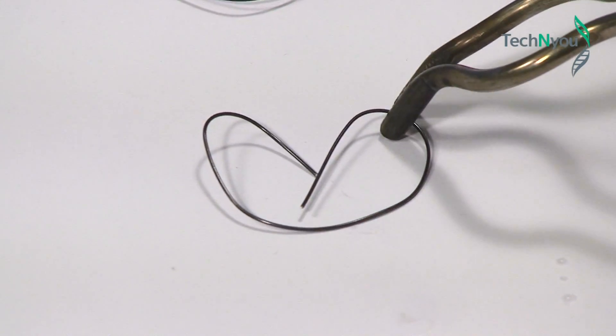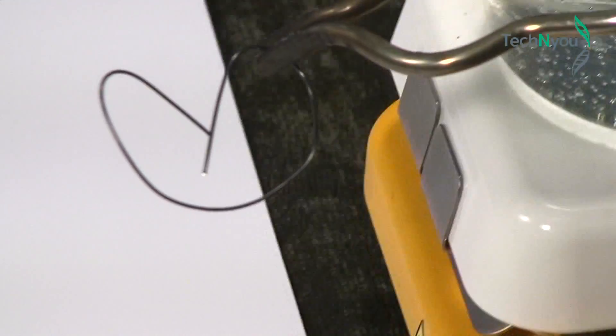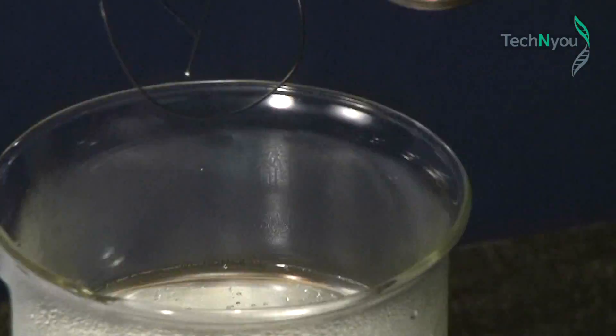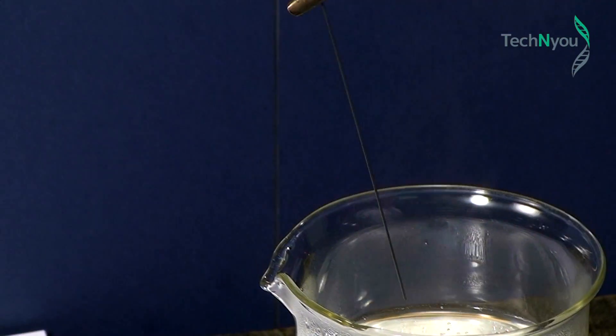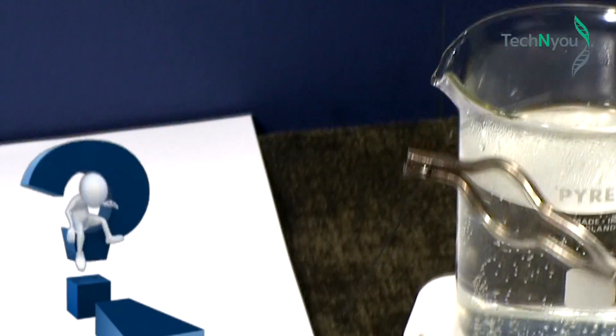Now let's try the Nitinol wire. We have to be very careful when it goes into the hot water, because it will change shape quickly. As you can see, the Nitinol wire has recovered its original straight shape.